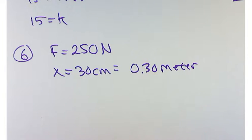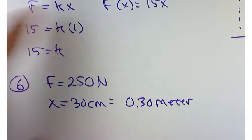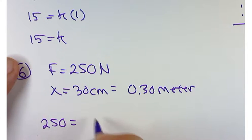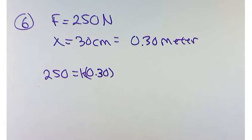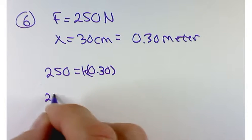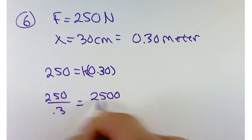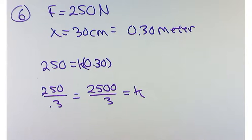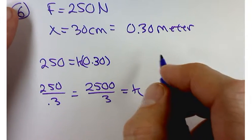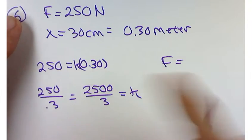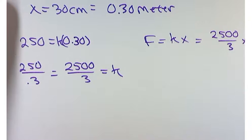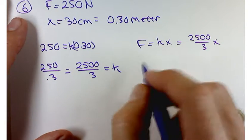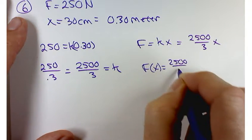From these two values we can figure out our constant of proportionality k. We need 250 = k × 0.30, so dividing both sides by 0.3 gives us 250 over 0.3, or better yet 2,500 over 3. That's our constant of proportionality. So we can rewrite our force function as f(x) = (2,500/3)x. That's our force function.